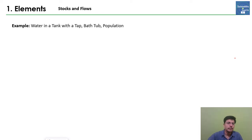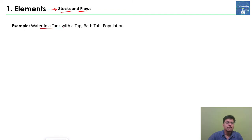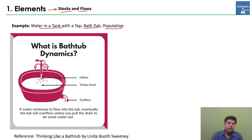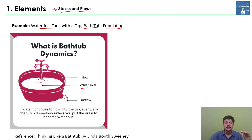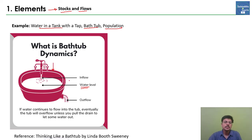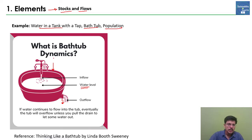The important elements may be stocks or flows — let's understand the difference. An example element could be water in a tank with a tap, or population. Taking the bathtub example: the water level is one element, and that is a stock. For this bathtub there will be an inflow — the tap through which water comes into the system — and an outflow, from where water is drained or leaves the system.